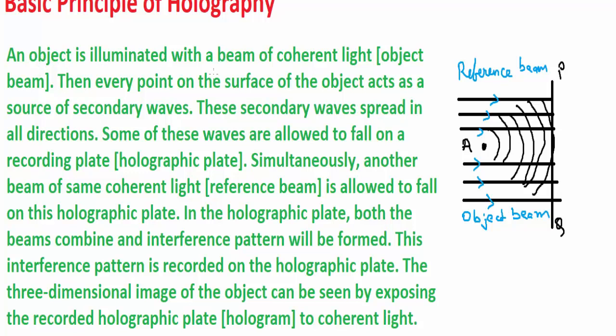An object is illuminated by a beam of coherent light. Then every point on the surface of the object acts as a source of secondary waves. These secondary waves spread in all directions. Some of these waves are allowed to fall on the recording plate, the holographic plate.